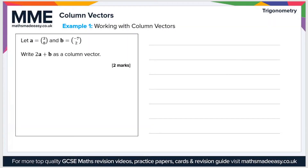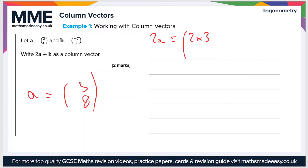So let's take a look at an example question. a is the vector (3, 8) and b is the vector (-7, 2). Write 2a plus b as a column vector. We'll do this step by step. So if a is (3, 8), then 2a is 2 times 3 and 2 times 8, which is equal to (6, 16).